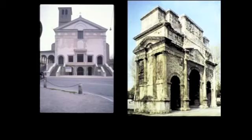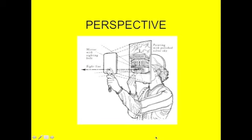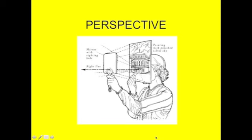There's one more little church in Mantua by Alberti, also with good proportions relating to antiquity, but it's not as important as the others. Next time we will continue the discussion.